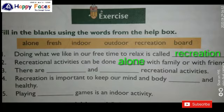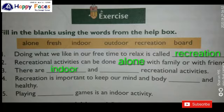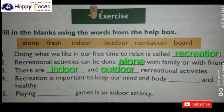Number 3: There are dash and dash recreational activities. Recreational activities are of two kinds - indoor and outdoor. So we have to write: There are I-N-D-O-O-R indoor and O-U-T-D-O-O-R outdoor recreational activities.